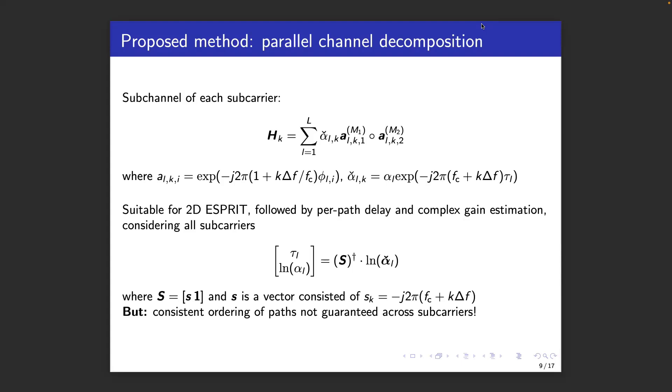These estimates are provided for all of the paths. Then, we can in theory compute the delay for all paths by combining the information across the subcarriers. However, we are not guaranteed that the paths preserve the ordering across subcarriers. This means that path 1 in subcarrier 1 may become path 5 in another subcarrier. To address this, we propose the following approach.